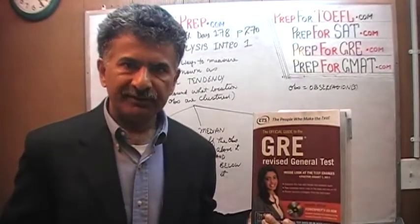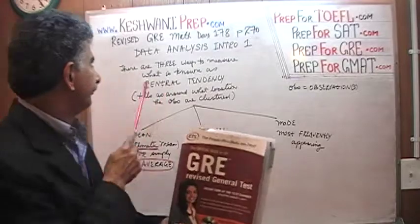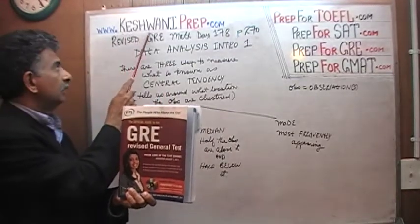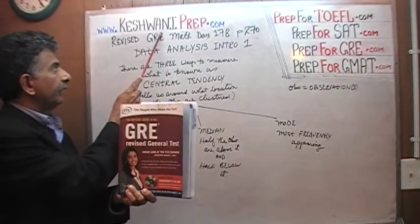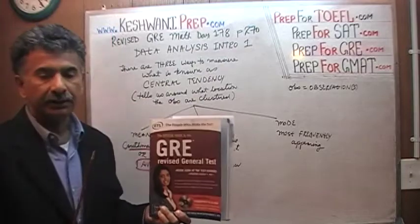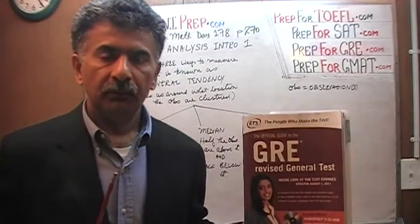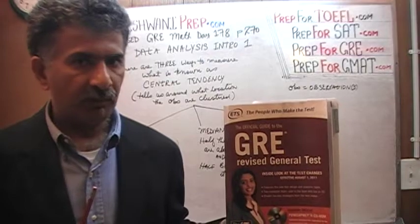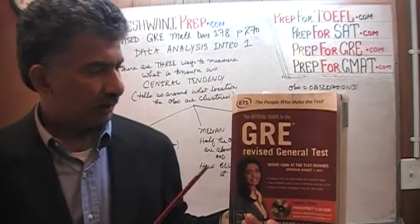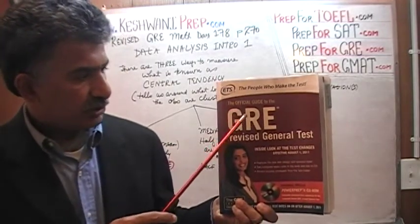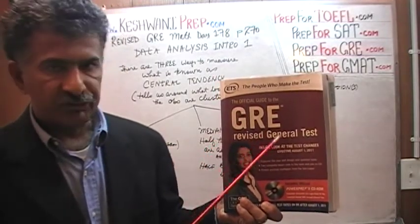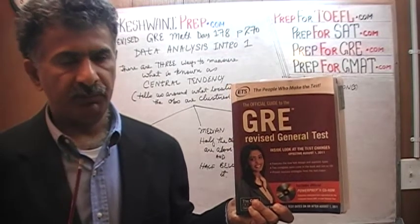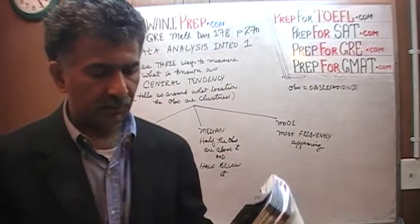Hello, my name is Keshwani — that's K-E-S-H-W-A-N-I. We are here because we want to prepare for the GRE. We have been solving math problems out of this book, The Official Guide to the GRE: The Revised General Test. If you do not own this book already, purchase it immediately. You are going to need it.